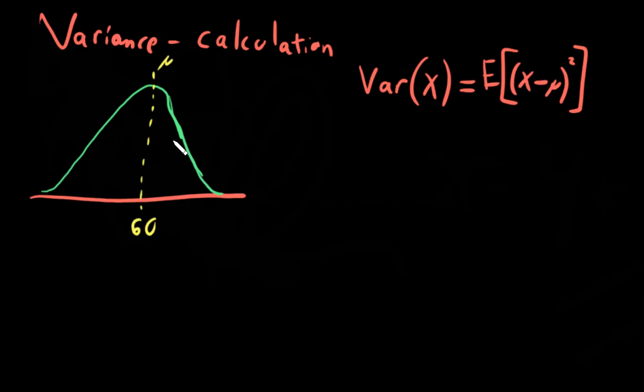we're modeling this as a normal distribution. We said that the mean was 60, that's mu, and so the variance represents the expected value of the random variable minus its mean squared.